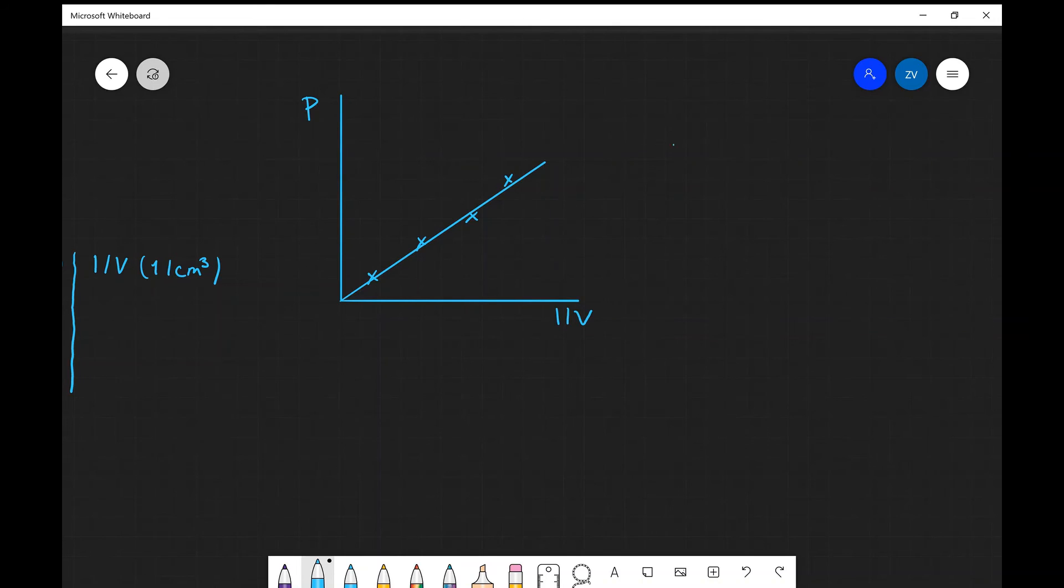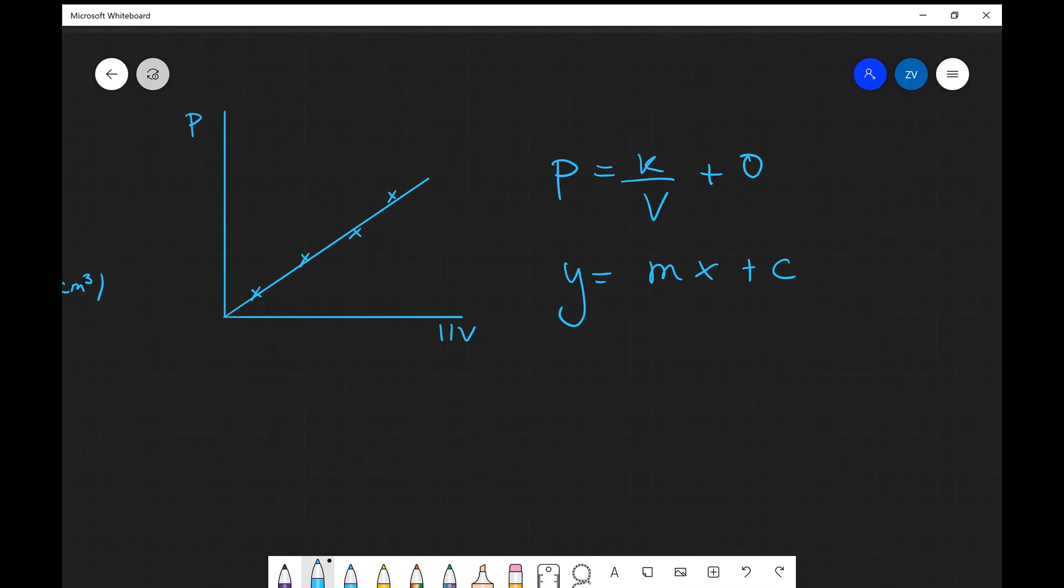and if you remember correctly, Boyle's law states that pressure is inversely proportional to the volume. So that means there's some constant k, which allows you to write it as an expression. We can apply y=mx+c analysis. Remember, I can always add a 0 on this side. And even better, rather than k/V, the way I'm going to write Boyle's law is k times 1/V plus 0.